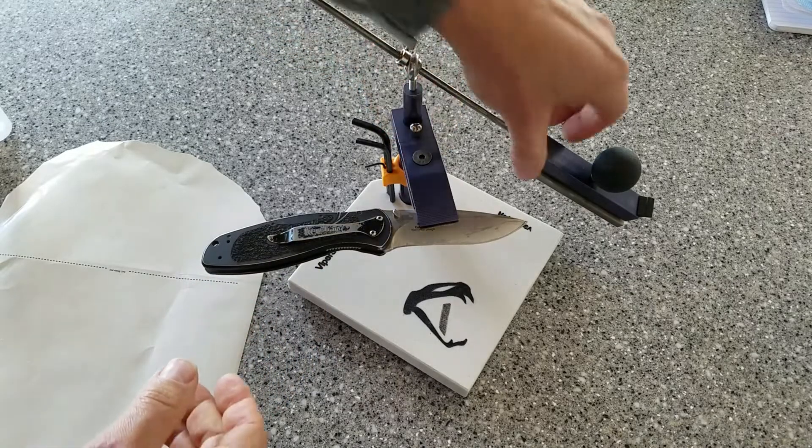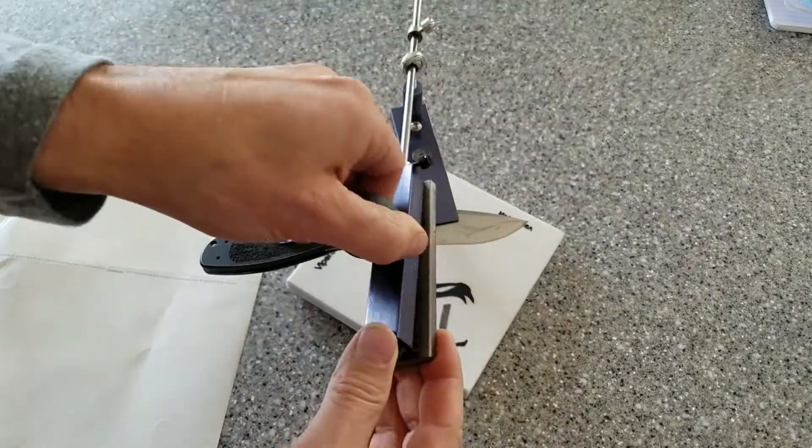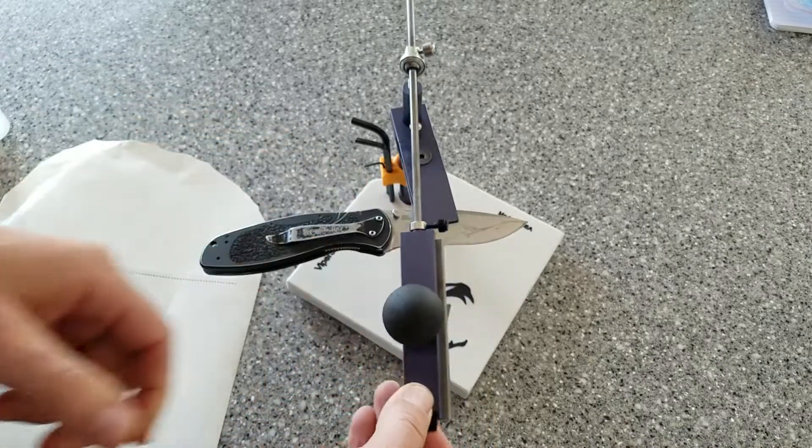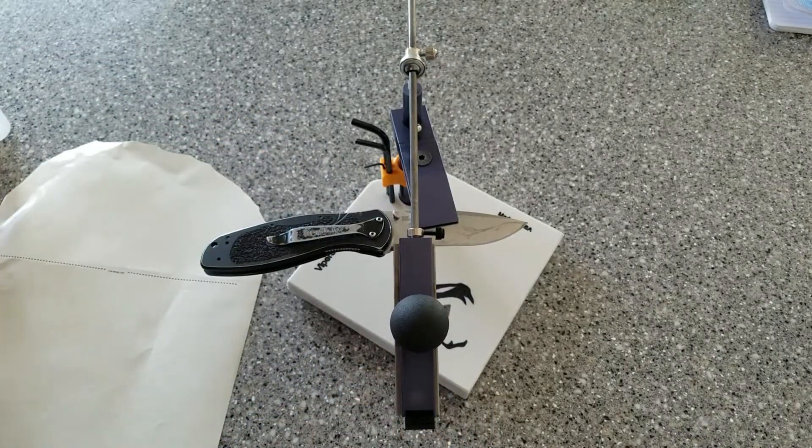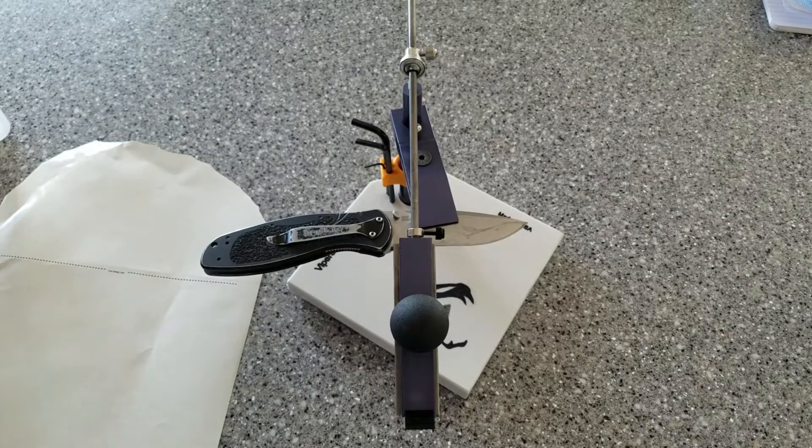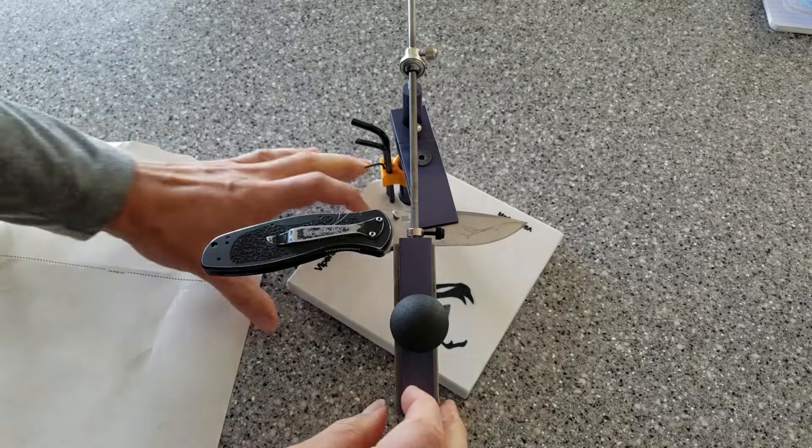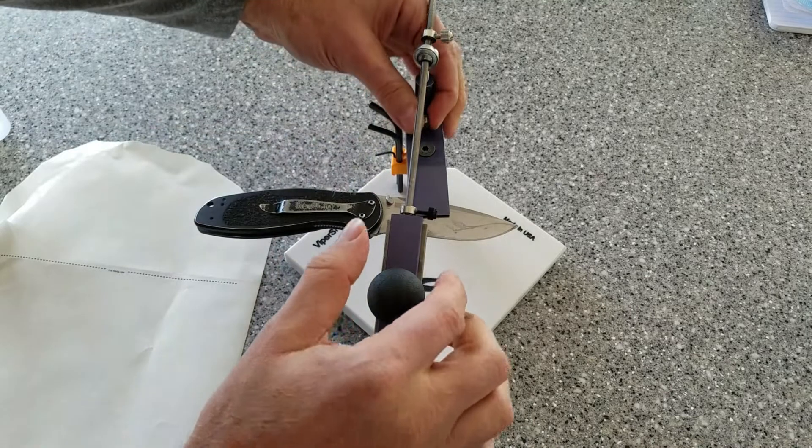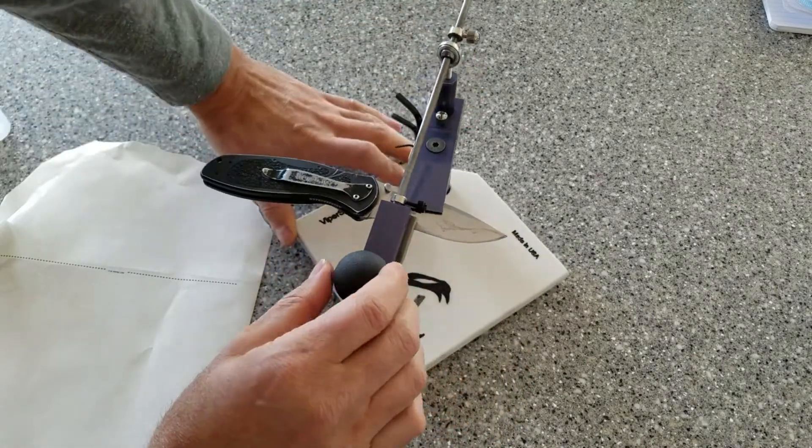And this is just a 1200 stone that I've got on here. Because it is just a touch up, it's not dull, it's not beat up or abused, it's just needing a quick touch up. So I've already figured the angle and put my marker on there.